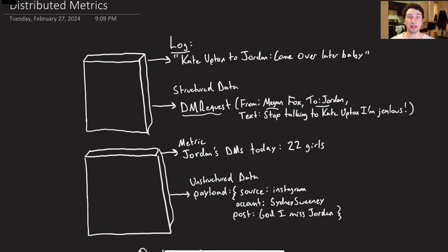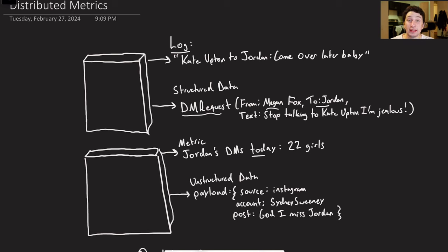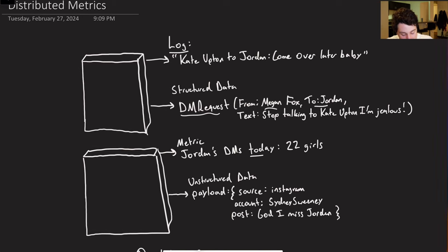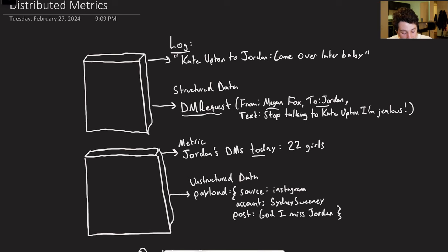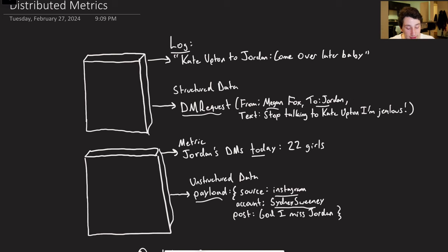The third type is going to be some sort of metric — maybe time-windowed data. For example, today a user has had 22 DMs from other users. And then finally we also have unstructured data, where we have some sort of payload that we're getting from another source that's not actually our application, and we're just forwarding it to persist it for later.